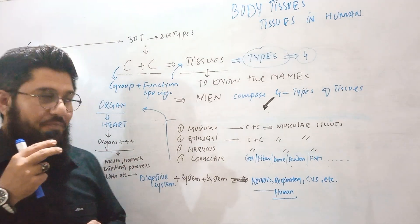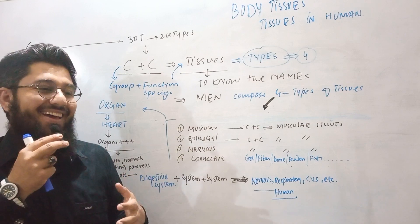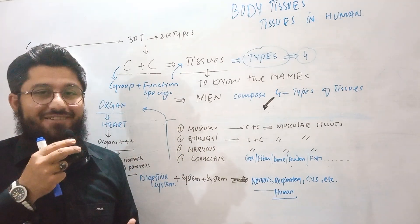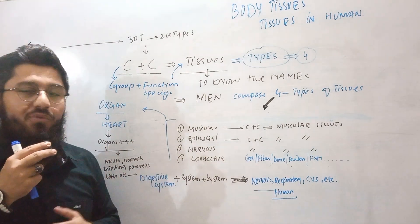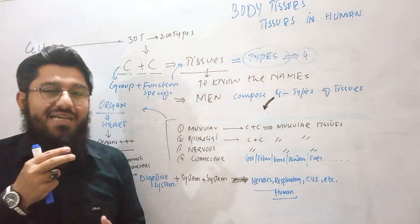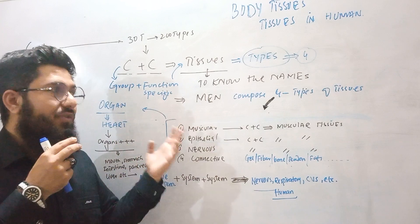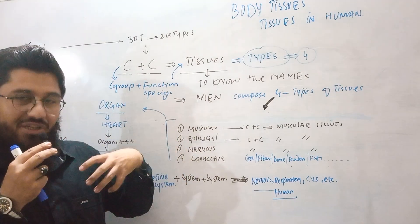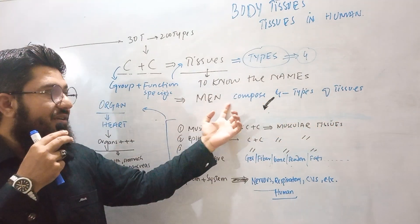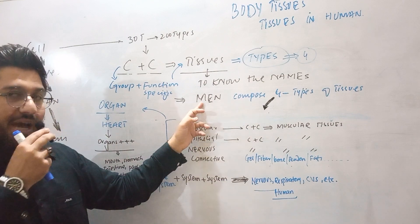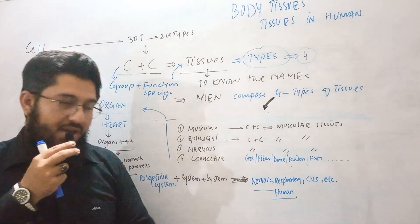I hope you got this. You will never forget about the types of tissues. So from now on, when anyone asks you how many types of tissues there are, you will tell without any hesitation that there are four types of tissues in the human body. Because 'Men Compose' gives us M — muscular, E — epithelial, N — nervous, and C — connective. And that's it.